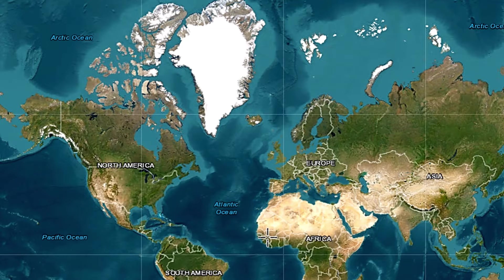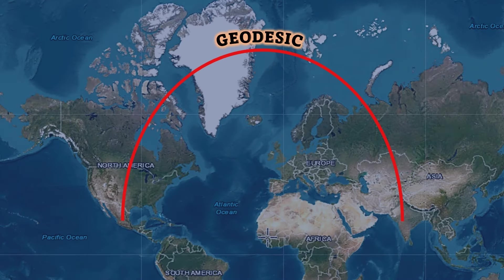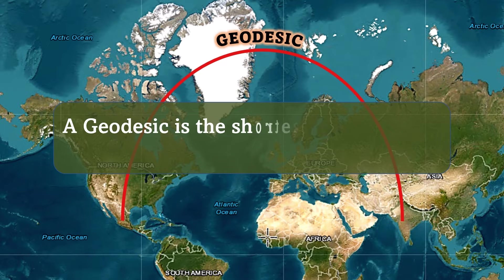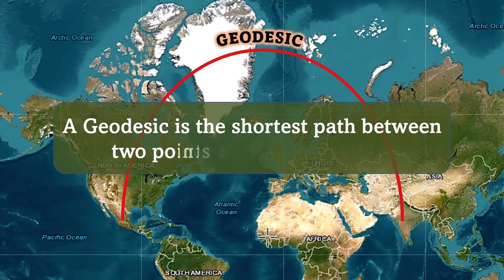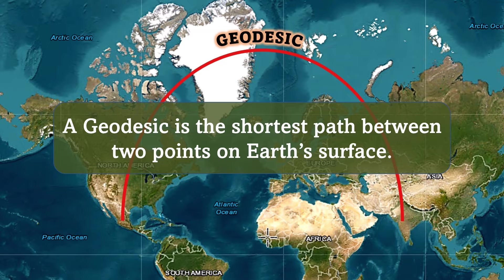Let me draw our route on this 2D map. This route is called a geodesic. By definition, a geodesic is the shortest path between two points, and it is especially useful to mariners because it is carved along the curvature of the Earth's surface.